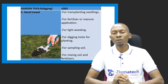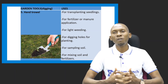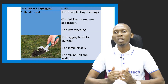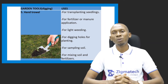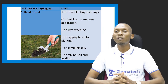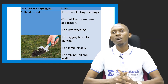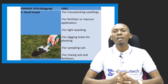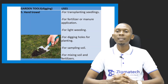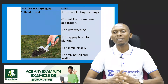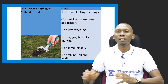We have the hand trowel as another garden tool. The hand trowel is used for transplanting seedlings from the nursery to the main field. It can also be used for fertilizer or manure application, for light weeding as a means of weed control, for digging holes for planting seeds directly in the field, for sampling soil, and for mixing soil and fertilizers applied to crops.